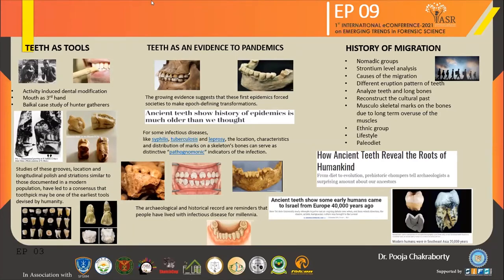Coming to the history of migration, strontium level analysis done from bone and teeth, when compared to the strontium levels of the soil, reveals the area of migration and population origin. But for that, a database of the land is a must-have.